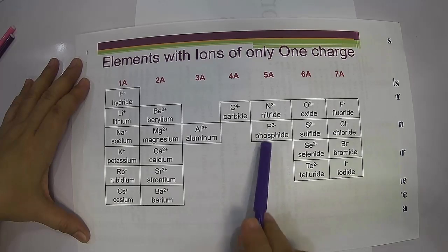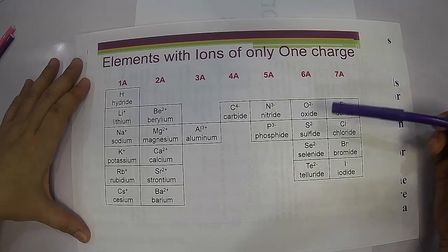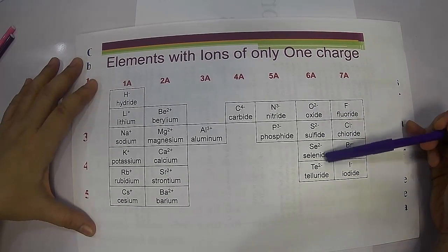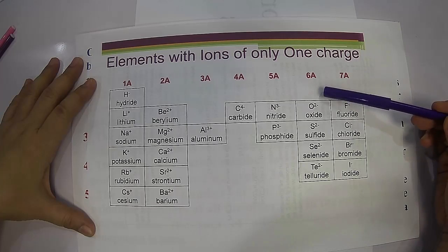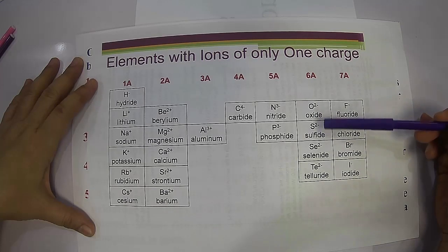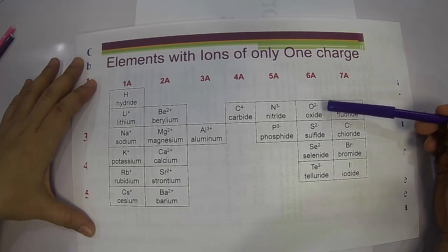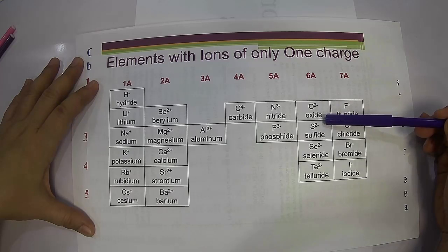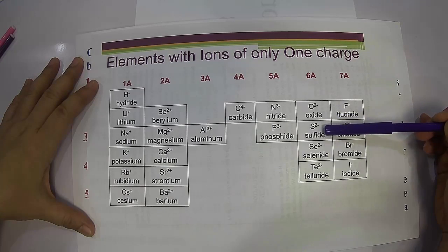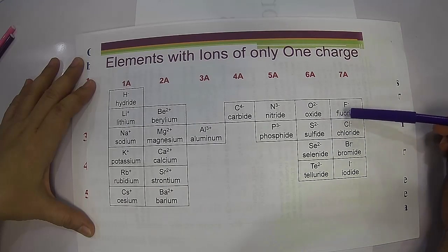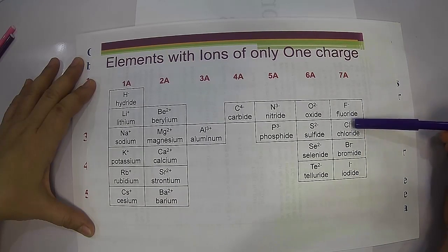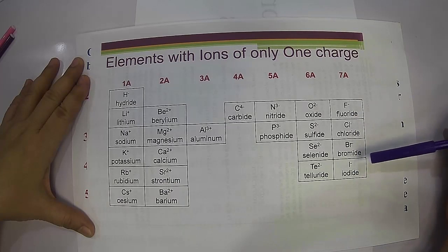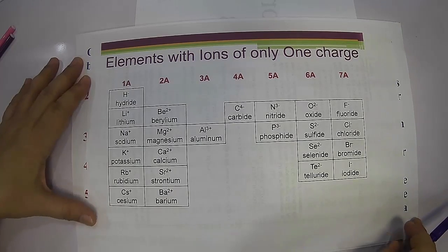Carbon as carbide is negative four, but it has other oxidation numbers as well. Nitride and phosphide are negative three. For group 6A, following the octet rule, which states an atom becomes stable when it has eight valence electrons, the group 6A elements have six valence electrons and need two more — that's why the oxidation state is negative two for most group 6A elements. Oxygen as oxide is always negative two, except in peroxides where it is negative one. Sulfide, selenide, and telluride are also negative two. For group 7A, the halides have a negative one oxidation number, needing only one more electron to follow the octet rule.